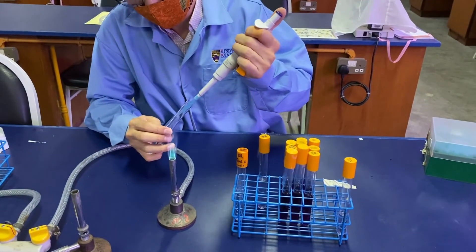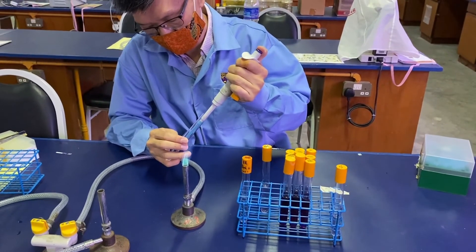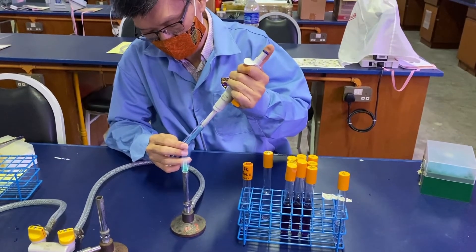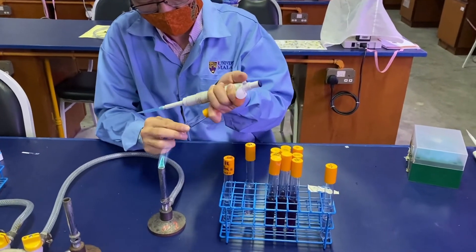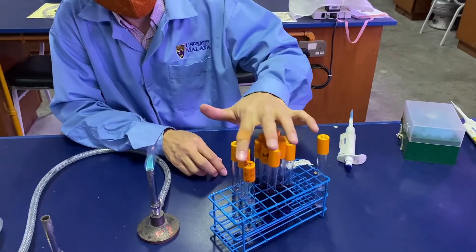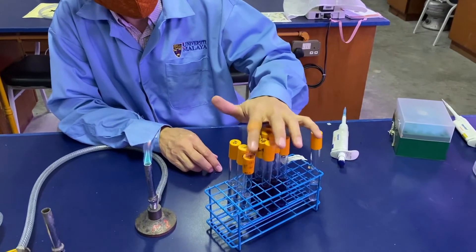Once you've carried out the serial dilution, you'll have your minus one, minus two, and minus three samples ready. Then you can proceed to dispense the sample.